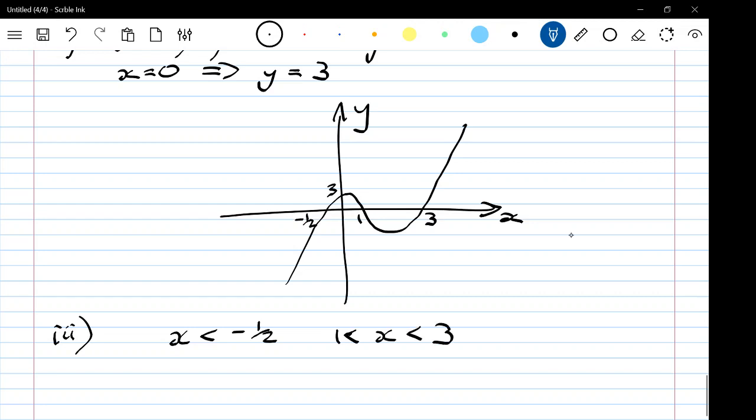I think we know that this is going to be x less than minus a half and x between 1 and 3. We can see that, can't we, from our diagram. That's when it's negative. When x is less than minus a half and between 1 and 3.